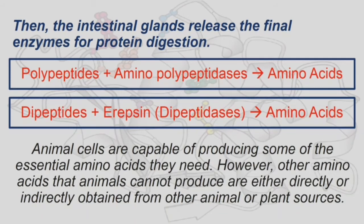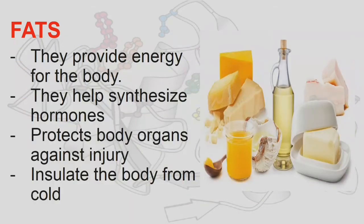Animal cells are capable of producing some essential amino acids; however, other amino acids that animals cannot produce are either directly or indirectly obtained from other animal or plant sources. Lastly, we will discuss the chemical digestion of fats. Fats provide energy for the body.